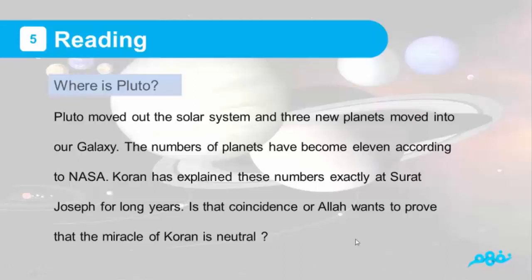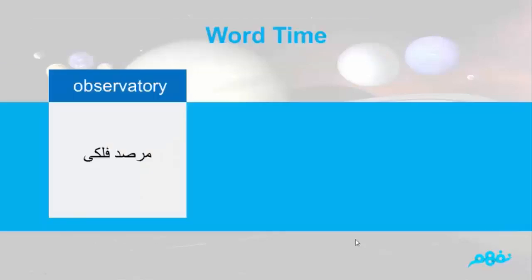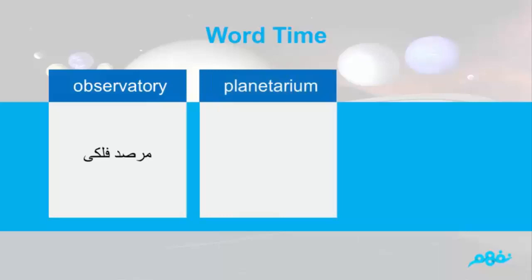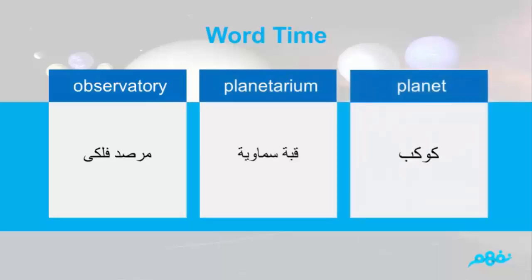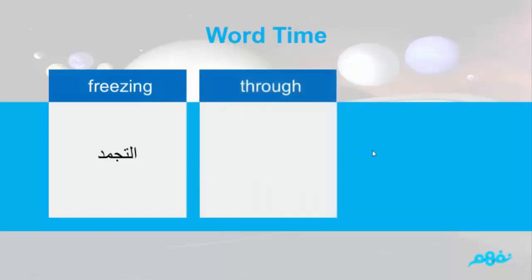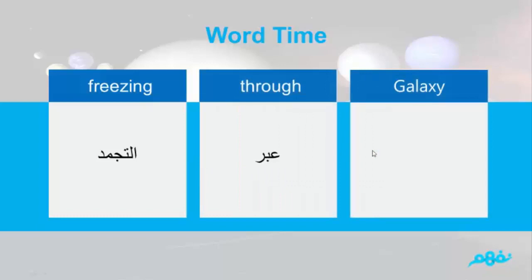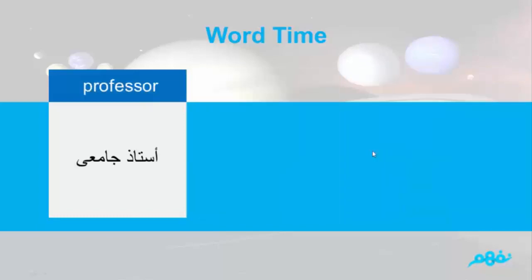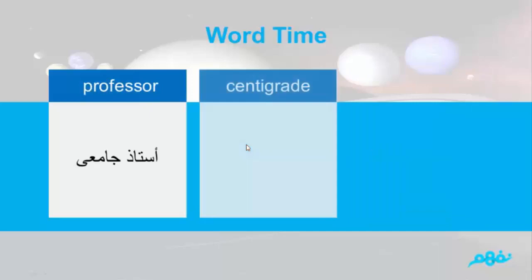So let's get started with the word time. Observatory — مرصد فلك. Planetarium — قطب سماوي. Planet — كوكب. Freezing — تجمد. Through — عبر. Galaxy — مجرة. Professor — أستاذ. Centigrade — درجة مئوية, like equal degree.